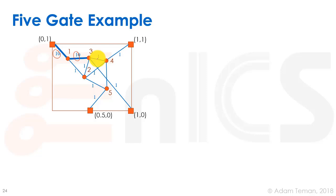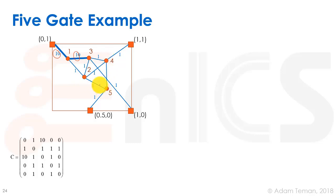First we build our connectivity matrix. In position (1,2) and (2,1) we put the weight between gate 1 and gate 2, which is one. In positions (1,3) and (3,1) we put the weight ten. In positions (3,4) and (4,3) we put weight one. In positions (2,4), (4,2), (4,5), and (2,5) we put weight one. The diagonal is all zeros. That's our connectivity matrix.